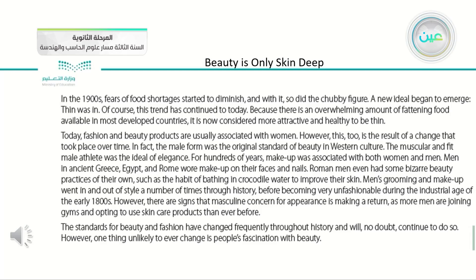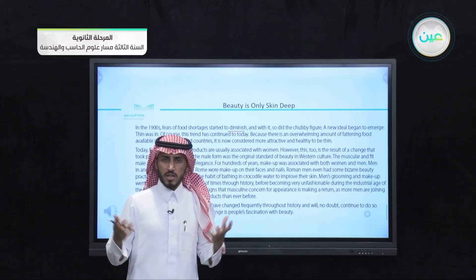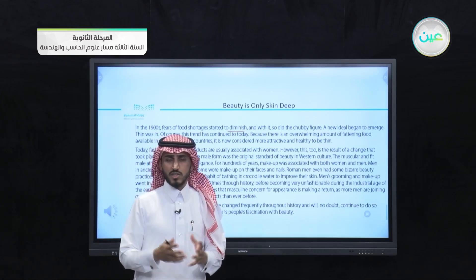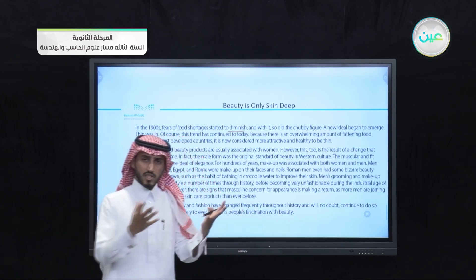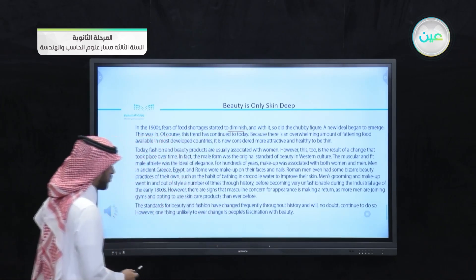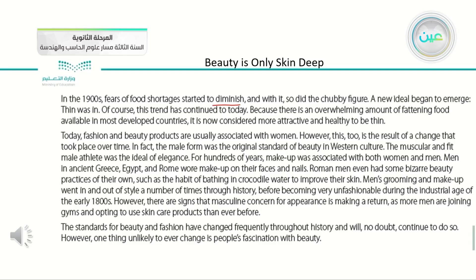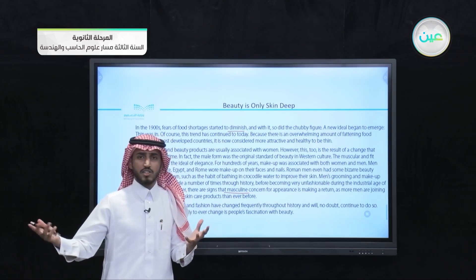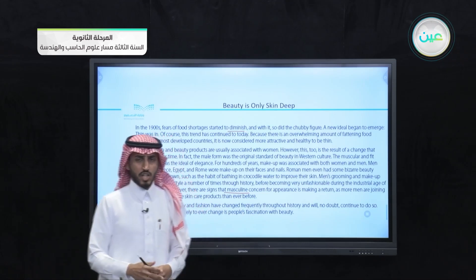This is the last part of our essay. We will start with the first word: diminish. In the 1900s, fears of food shortages started to diminish — the word diminish means minimize or decrease. Another word is masculine, which means anything related to men. Anything related to women is called feminine. So we have two words: masculine for anything related to men, and feminine for anything related to women.